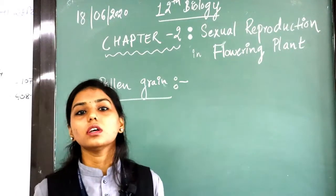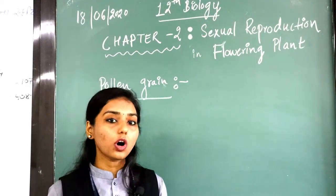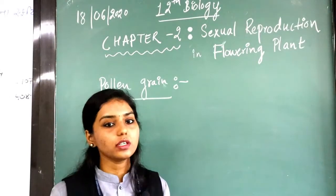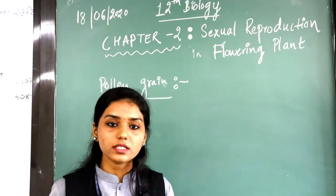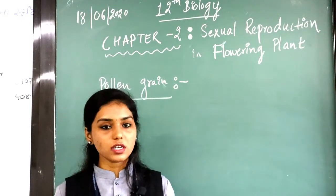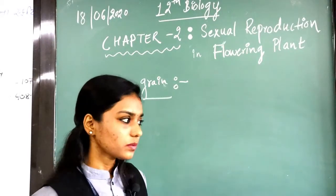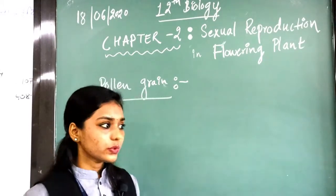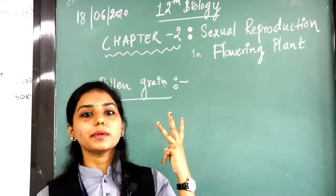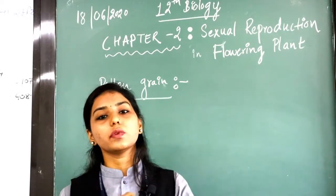Then we have seen the four-walled layers that are present in microsporangia, which were: epidermis, endothecium, middle layer, and the last innermost layer that was tapetum. The top three layers — epidermis, endothecium, and middle layer — are involved in giving protection.